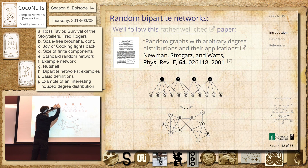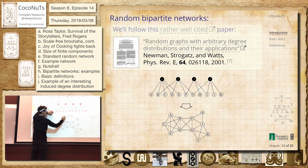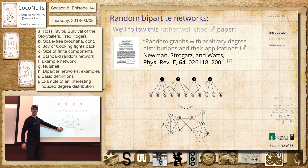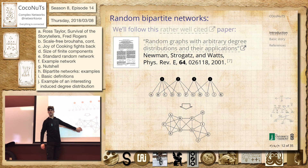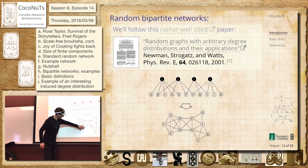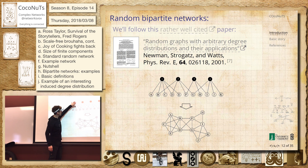You can see that that's like the movie story. There are five of them here, and that makes a clique — a complete K5 graph. Everyone's connected to everyone, and that's because of this bipartite structure.